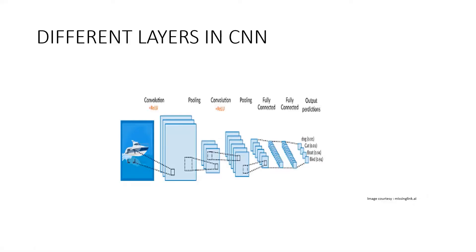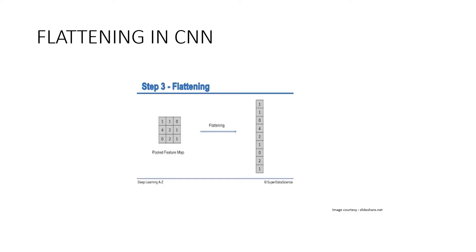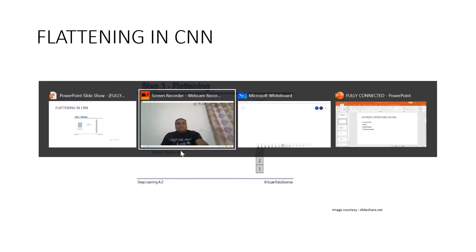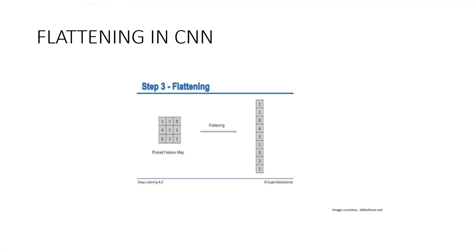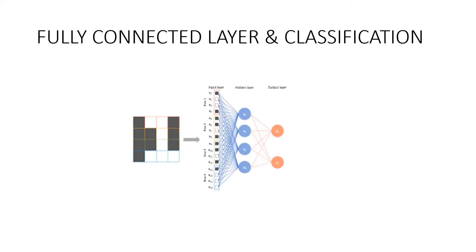Next we need to understand an important operation known as flattening. The input layer of the fully connected feed-forward network is fed with flattened data. Flattening collapses the spatial dimensions of the input into channel dimensions. We take the output of the max pooling layer and put it into a tensor known as a vector, as shown in the diagram.